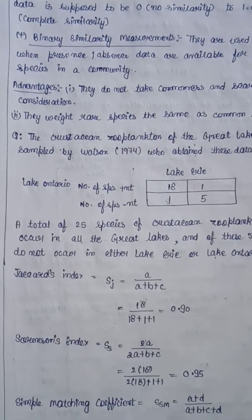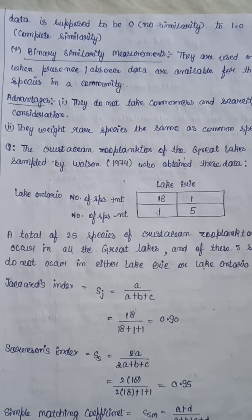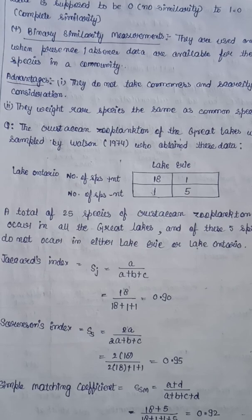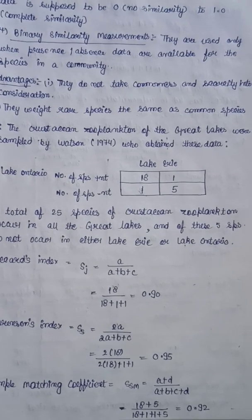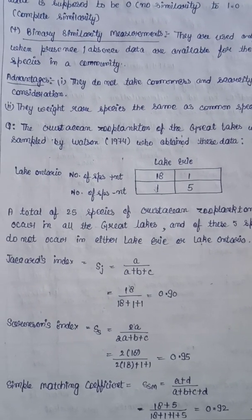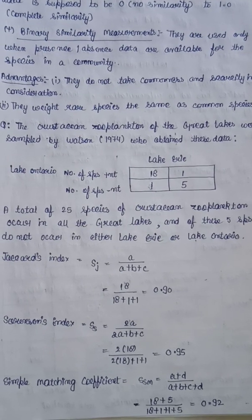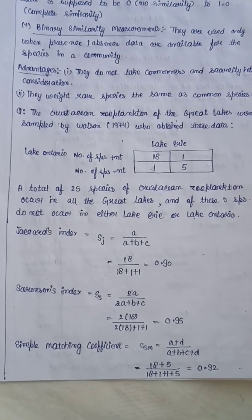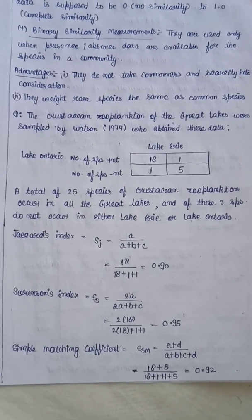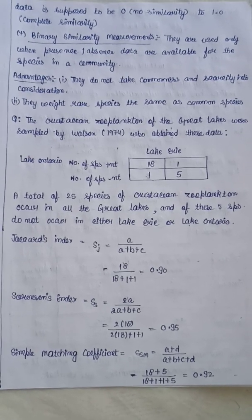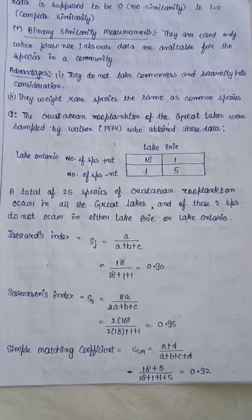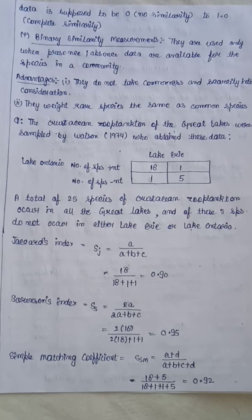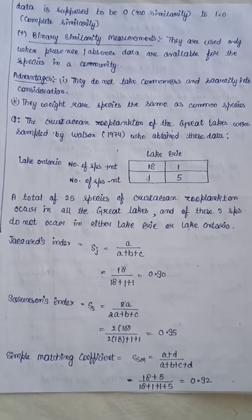The range of all binary similarity coefficients is from zero — denoting no similarity — to 1.0, denoting complete similarity. Binary similarity measurements are used only when presence or absence data are available. Their advantages are that they do not take commonness or scarcity into consideration, and they weight rare species the same as common species — all species are treated equally.